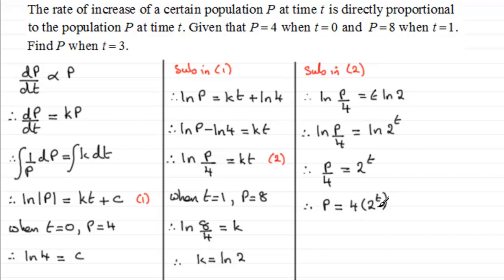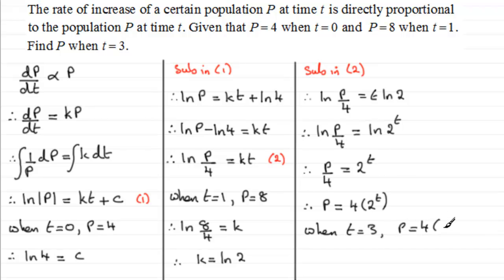A common mistake here is writing 8 to the power t — it's not 8 to the power t, it's 4 multiplied by 2 to the power t. Now we can answer the question: when t equals 3, p equals 4 multiplied by 2 cubed. 2 cubed is 8, and 4 times 8 is 32, so p equals 32.